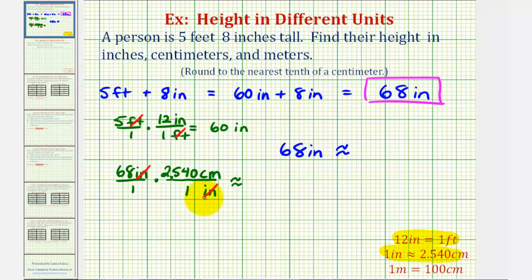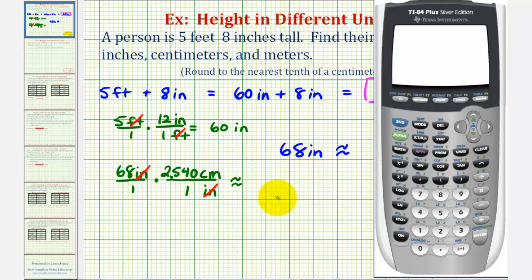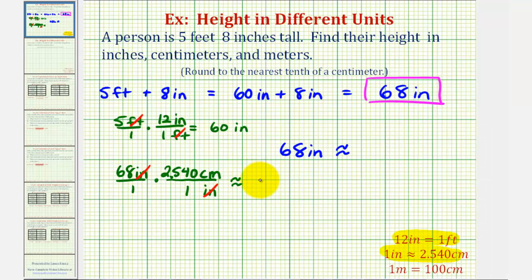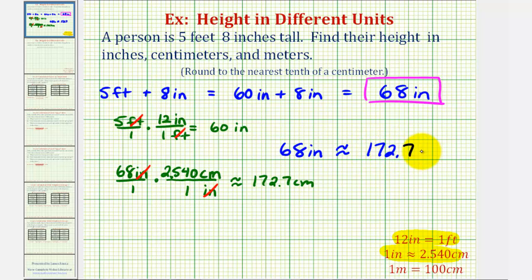Notice our denominator is equal to one. So now we'll go to the calculator: sixty-eight times two point five four zero. Rounded to the nearest tenth, that would be one hundred seventy-two point seven centimeters. So five feet eight inches, or sixty-eight inches, is approximately one hundred seventy-two point seven centimeters.